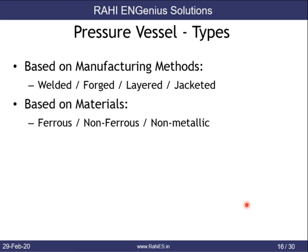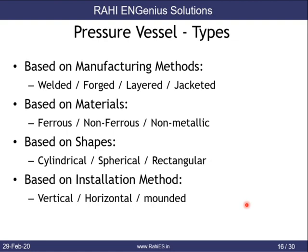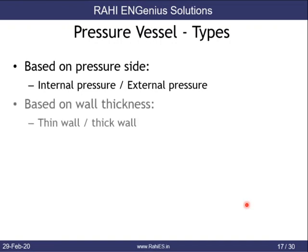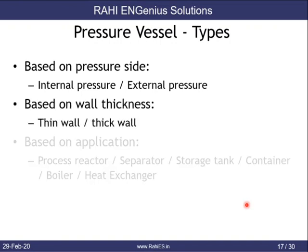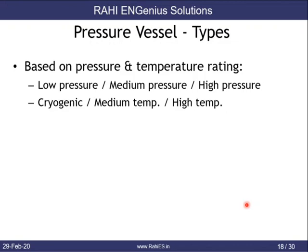Based on materials, vessels can be ferrous, non-ferrous, or non-metallic. Based on shape, they can be cylindrical, spherical, or rectangular. Based on installation, they can be vertical, horizontal, or mounted. They can also be classified based on pressure side (internal or external), wall thickness, application (process reactors, separators, storage tanks, FCC vessels, boilers, heat exchangers), usage (fixed or mobile), and pressure and temperature rating.